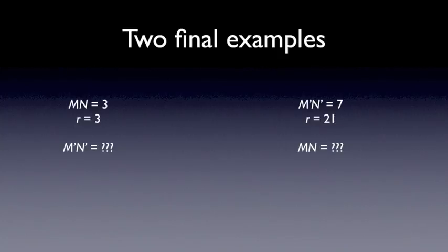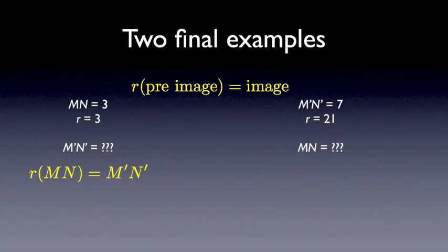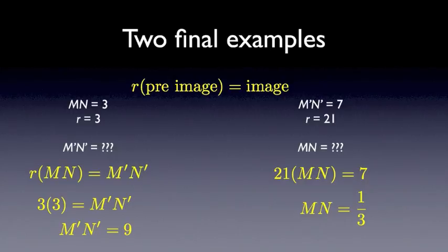Two final examples, no pictures here. We're just given that the length MN is equal to 3, R is equal to 3, and what is the image of MN? And likewise, similar but different numbers, we've got the image MN is 7, scale factor was 21. What was the length of the original pre-image? So again, the key here is R times pre-image equals image. And so for the first example, we know scale factor times pre-image equals image. So therefore, 3 times 3 must equal that image length. Likewise, in the other example, we see that MN must be 1 third units long.